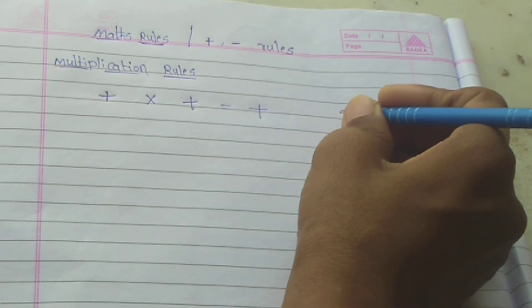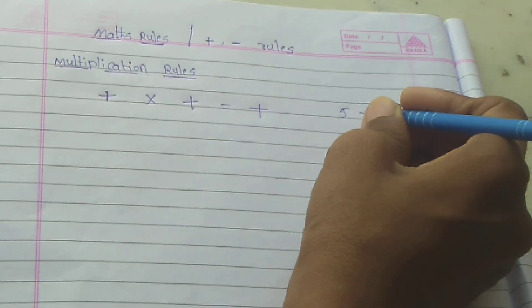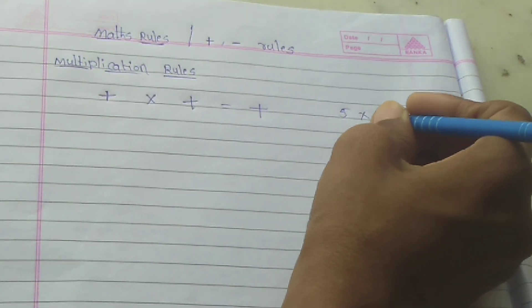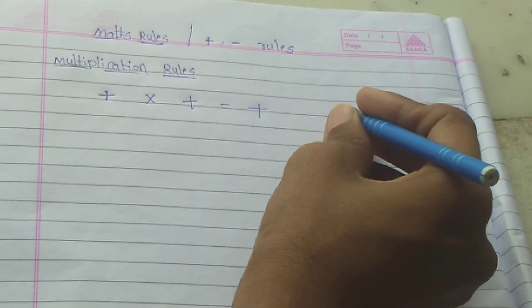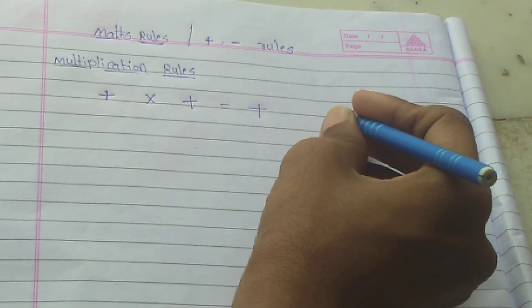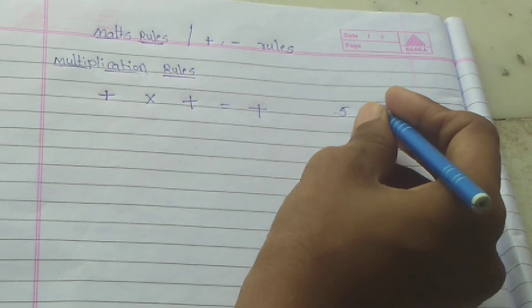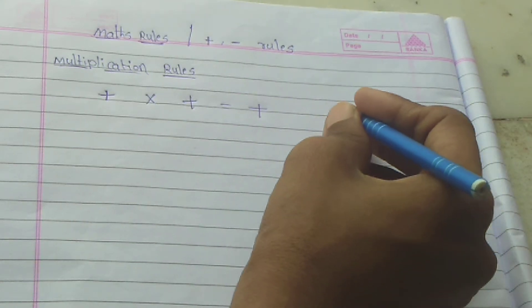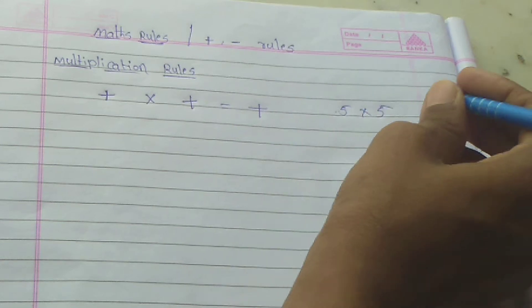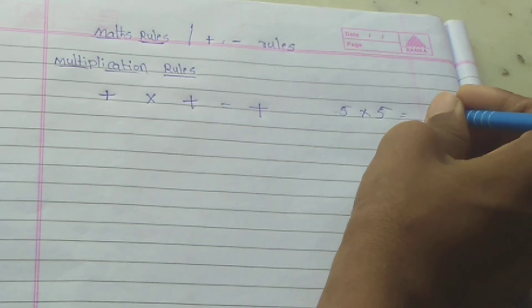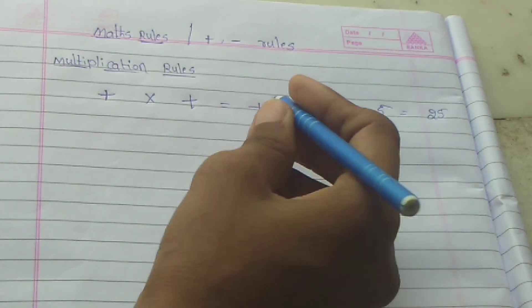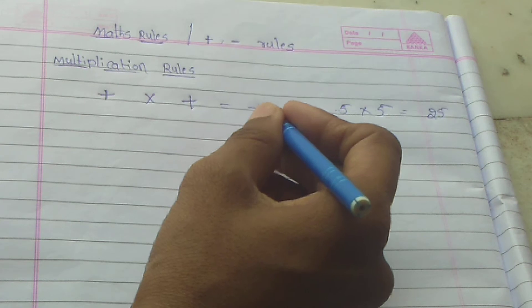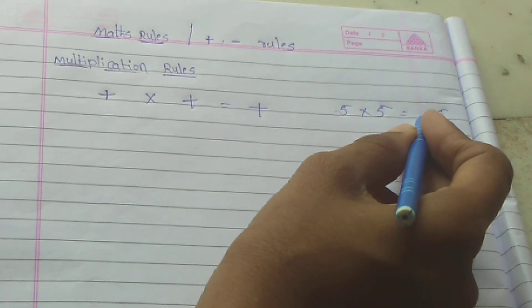For example, 5 into 5. Here there is no negative symbol, which means plus times plus. The answer is plus — plus into plus gives plus.